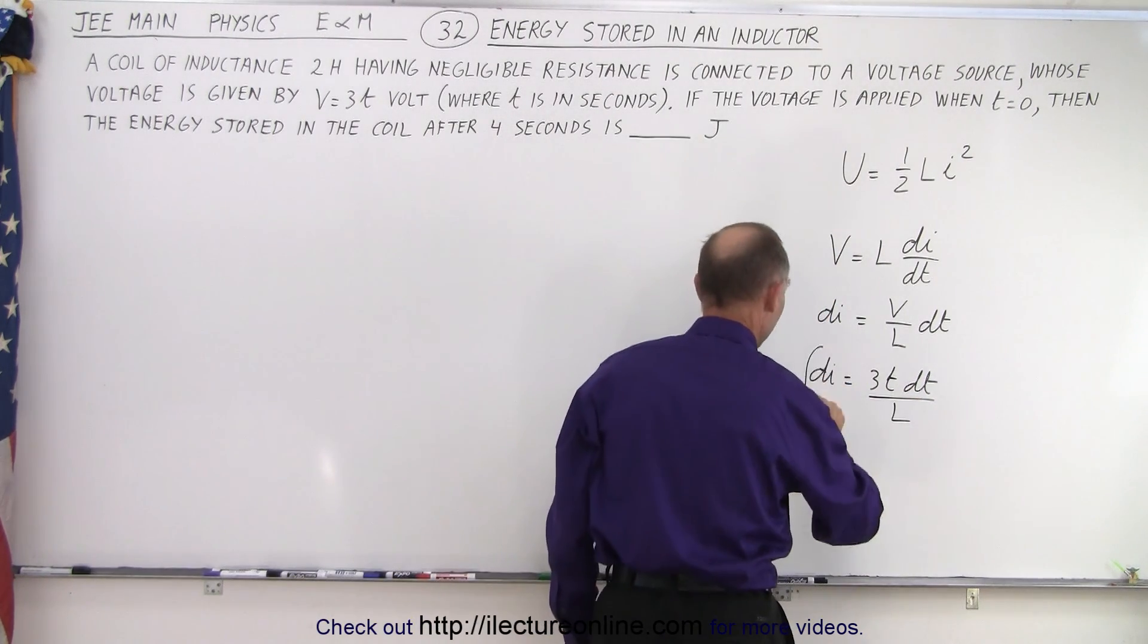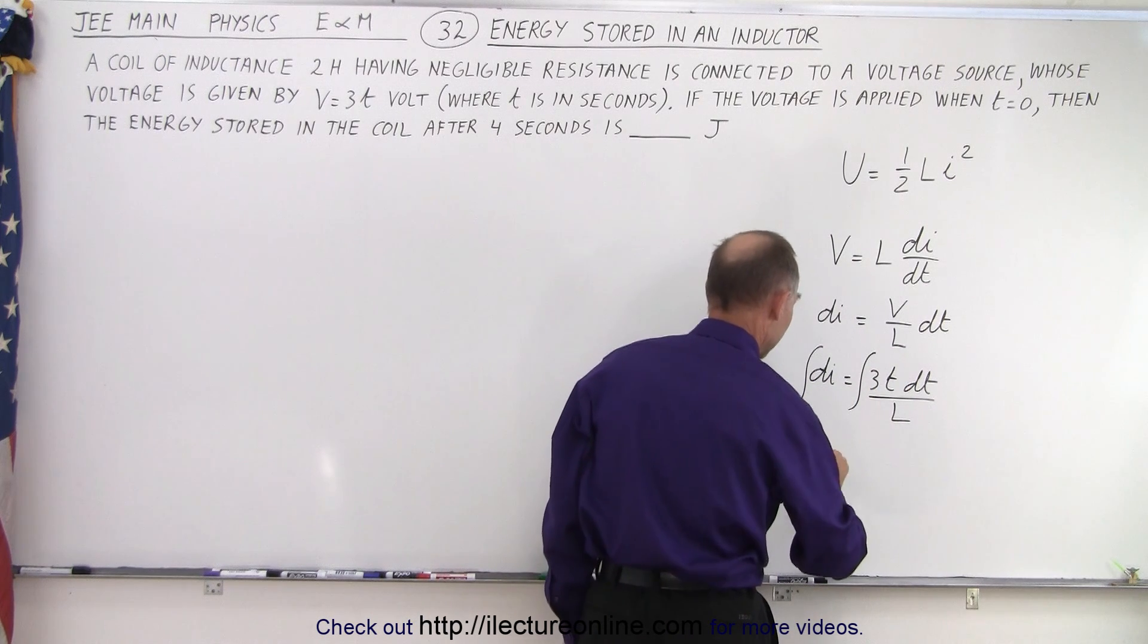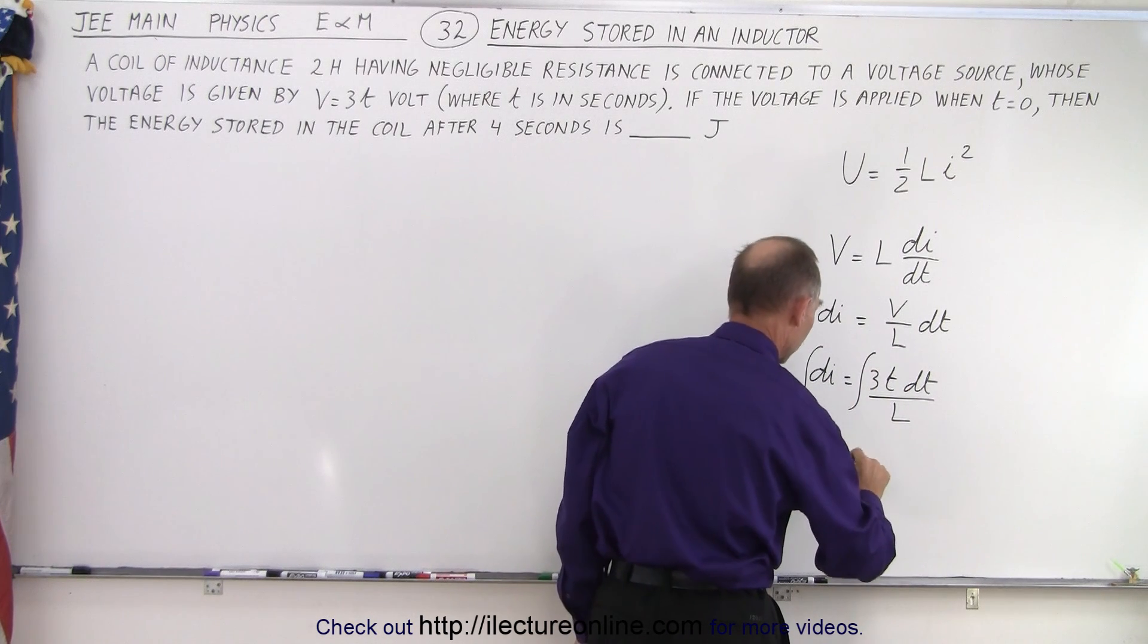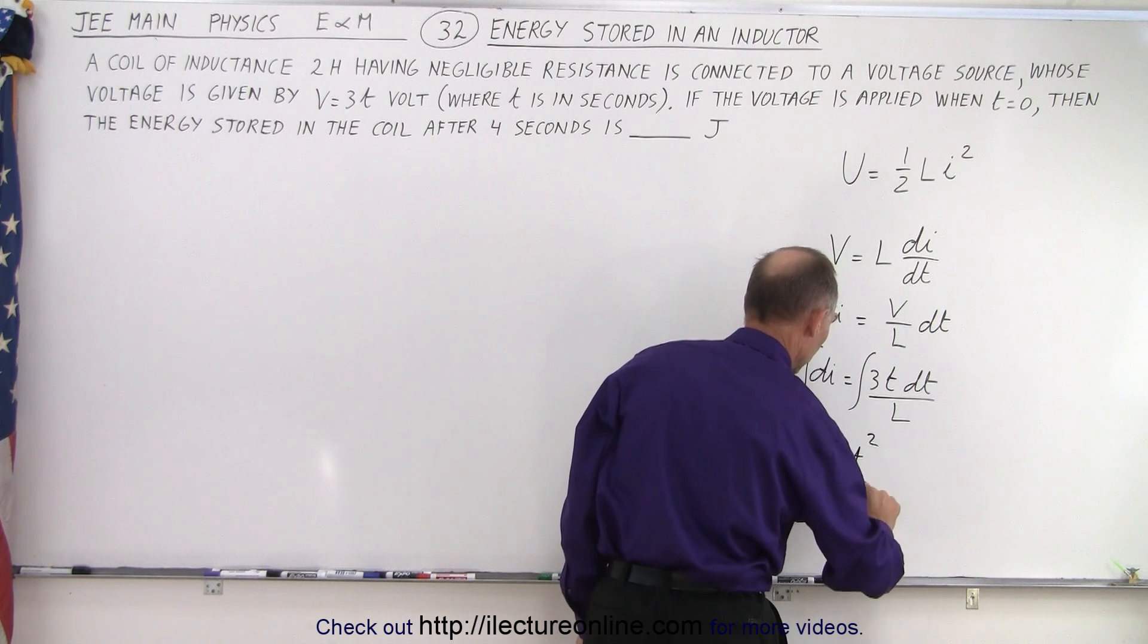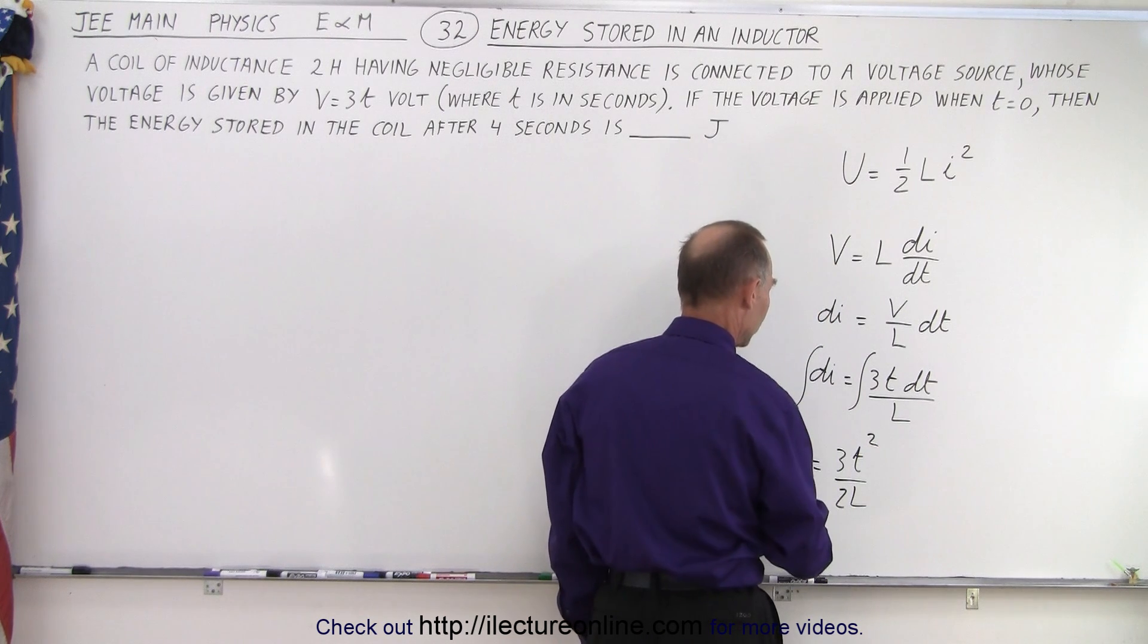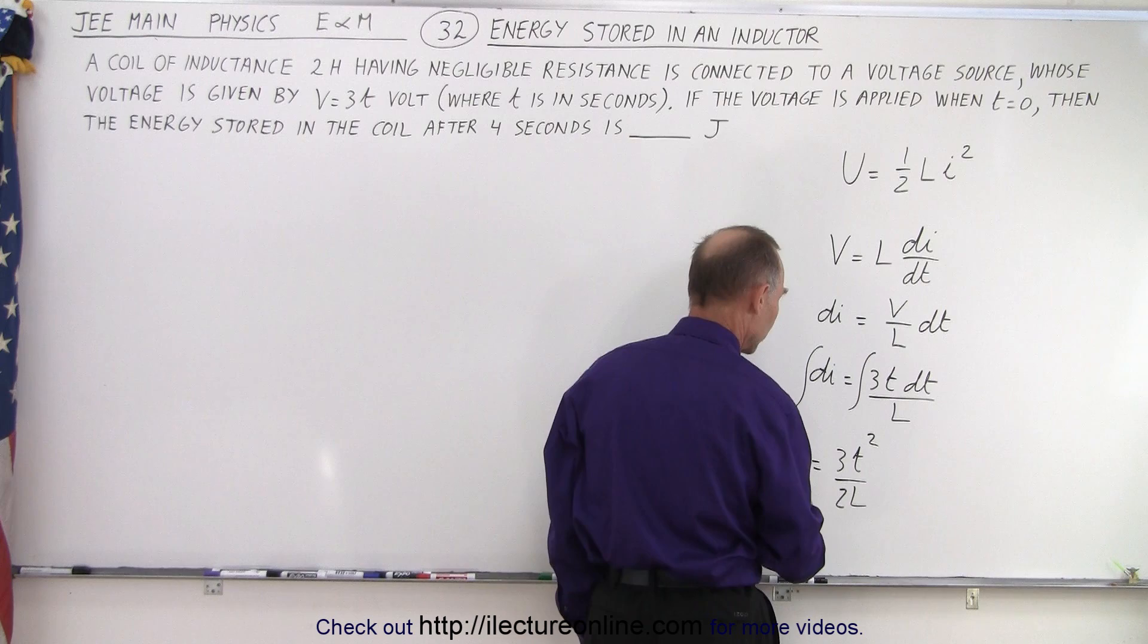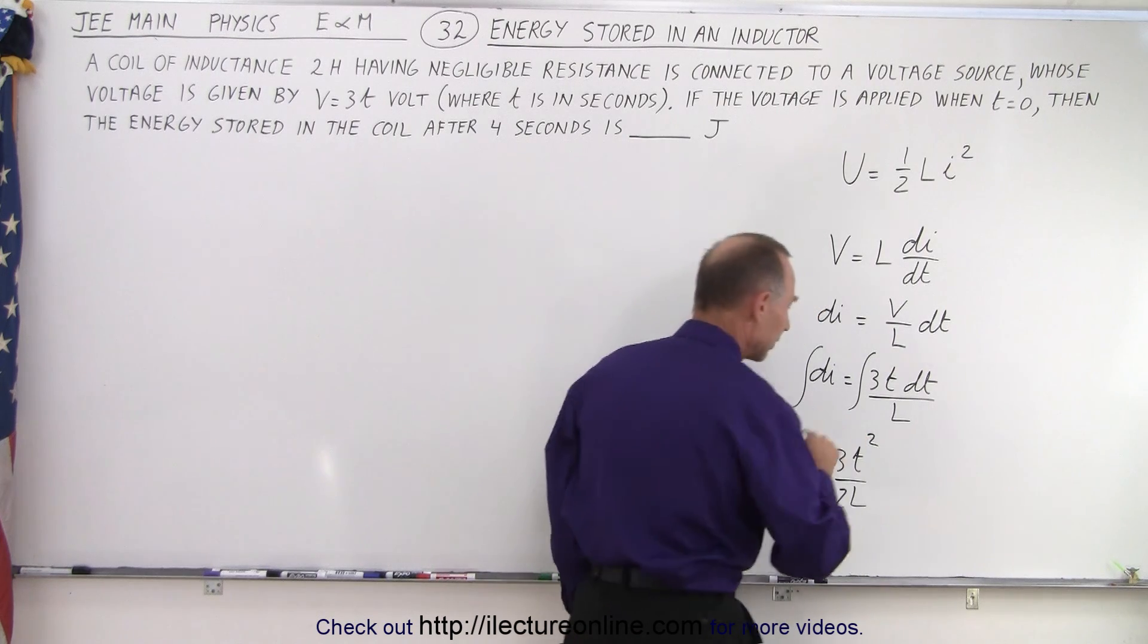We can integrate both sides and we can therefore say that I is equal to 3t squared over 2 times L. And so now we have a relationship between the current, the time, and the inductance.